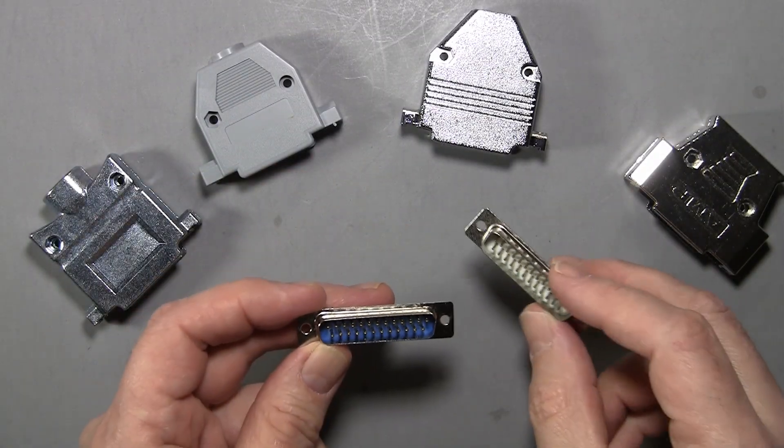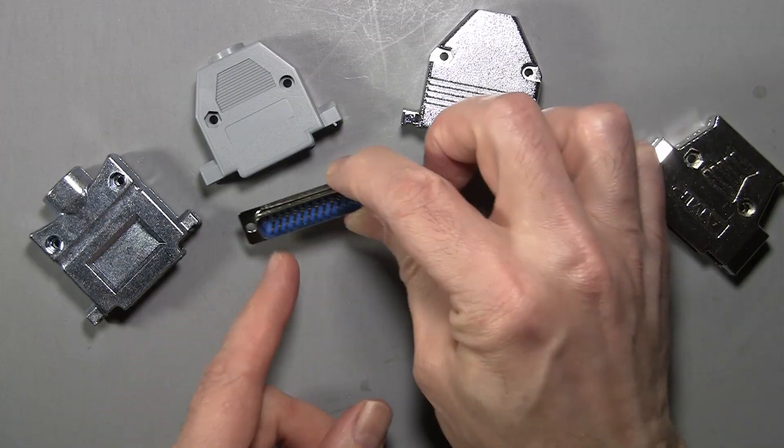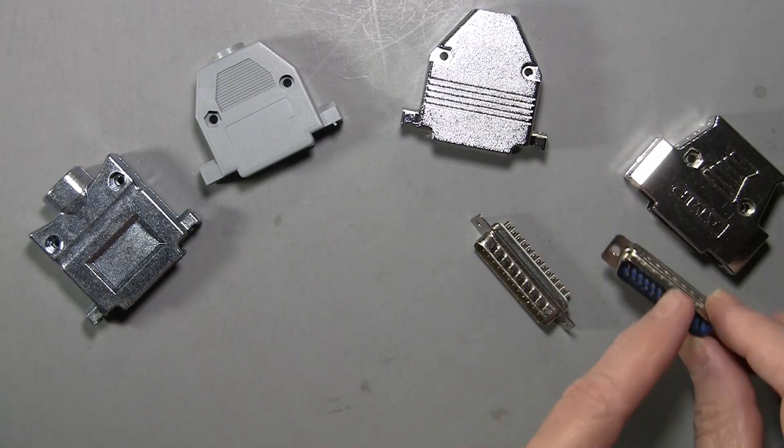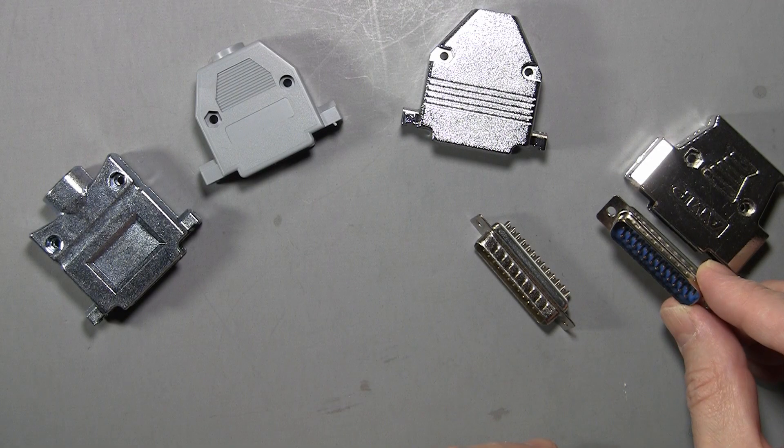Sometimes you just don't have that much money and you have to go with what you can afford. That would be the gold connector with the plastic shell or this less expensive metal shell. I would avoid using the plastic shell if possible and definitely wouldn't use it on a mic line.